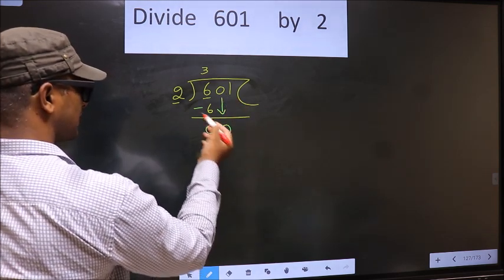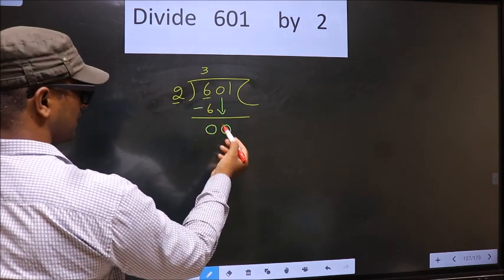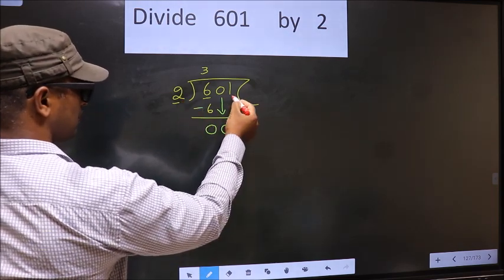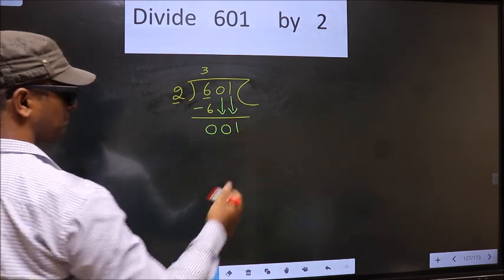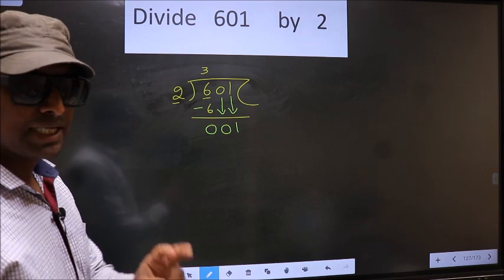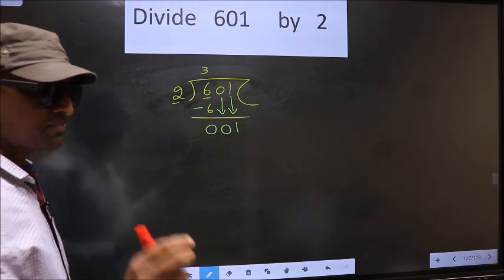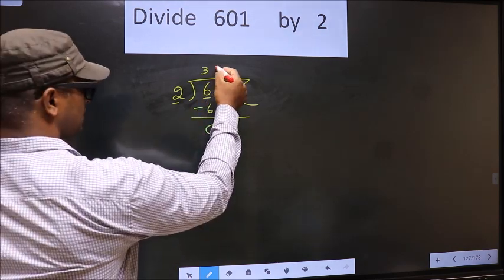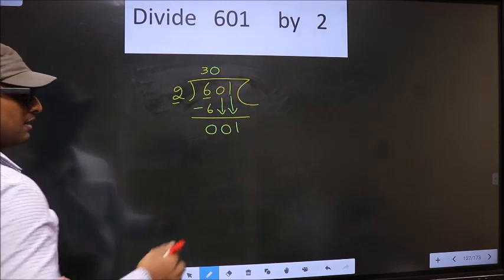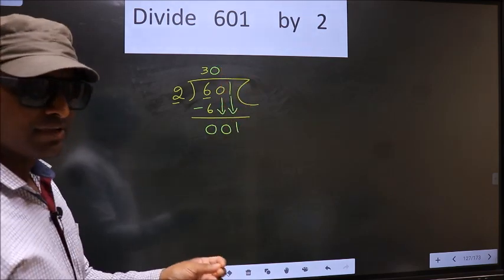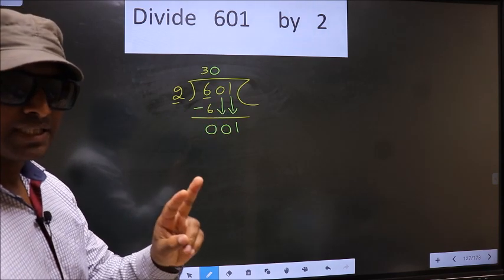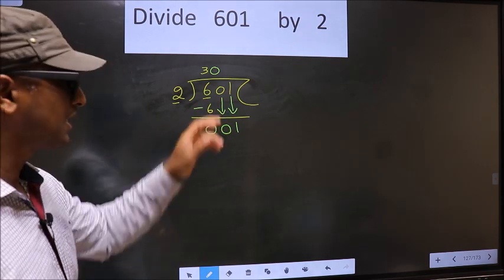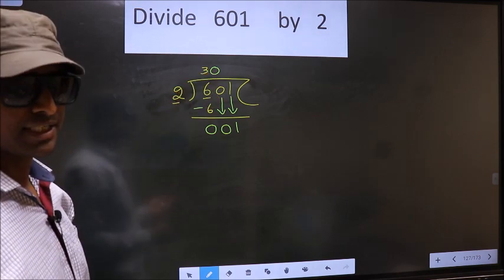So here we have 0 here 2. 0 is smaller than 2. So we should bring down the next number 1 down. Now remember, whenever you are bringing down two numbers, compulsory you should put 0 in the quotient. I repeat, whenever you are bringing down two numbers at the same time, compulsory you should put 0 in the quotient.